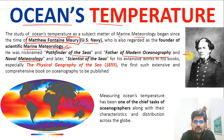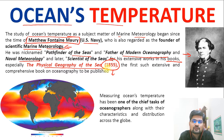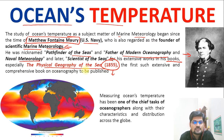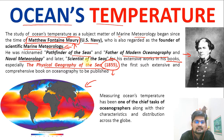M.F. Maury, in his extensive works in his book — the Physical Geography of the Sea — in 1855, made measuring the ocean's temperature one of the key features. That's why Matthew Fontaine Maury is regarded as the scientist of the seas, or the father of modern oceanography.